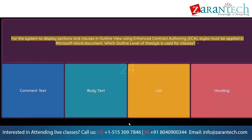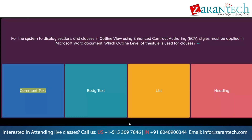Question: For the system to display sections and clauses in Outline View using Enhanced Contract Authoring (ECA), styles must be applied in a Microsoft Word document. Which outline level style is used for clauses? Option 1: Comment text. Option 2: Body text. Option 3: List. Option 4: Heading.